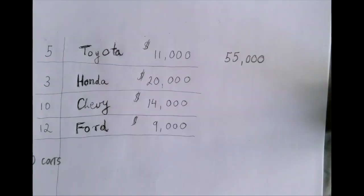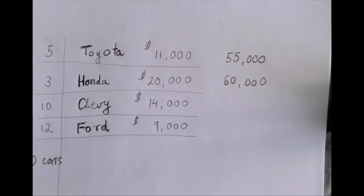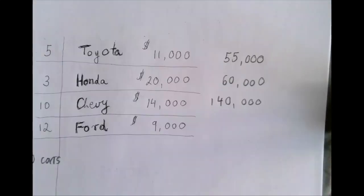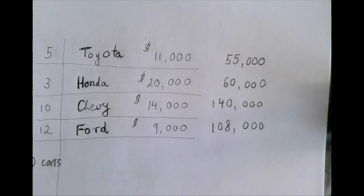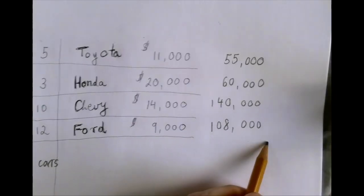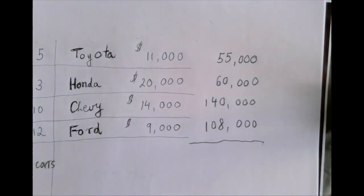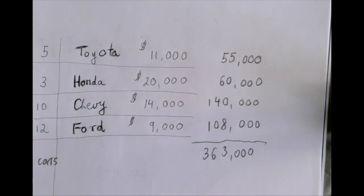Five times 11,000 is 55,000 — that's the value of the five Toyotas. The value of the Hondas would be 60,000. The Chevys, 140,000. And the Fords, 108,000 — we simply multiplied 9,000 by 12. Adding these gives the total value of all 30 cars: $363,000.